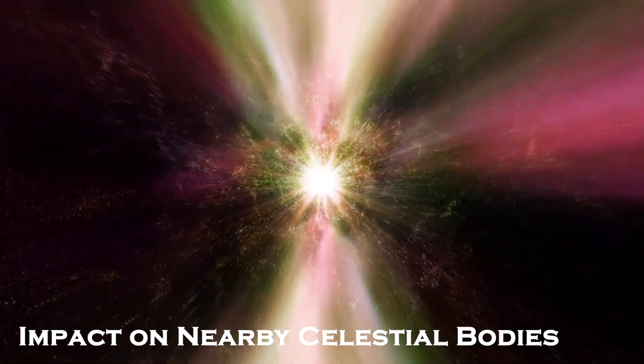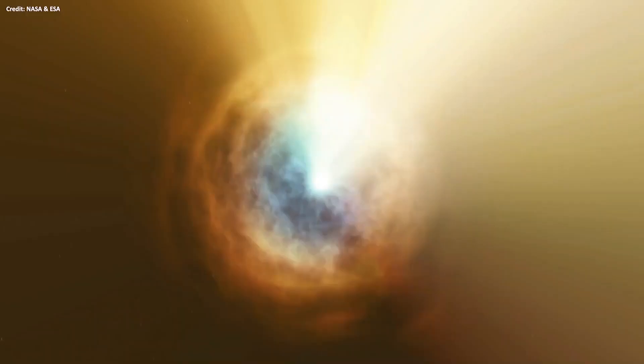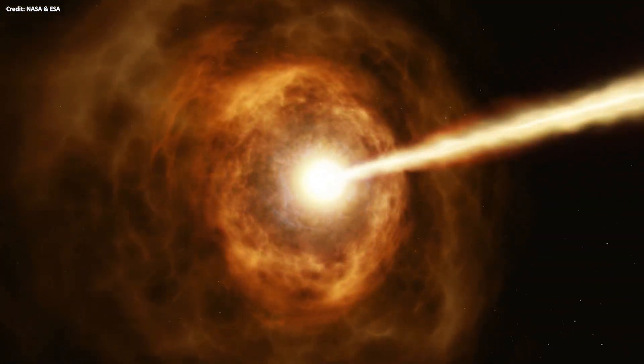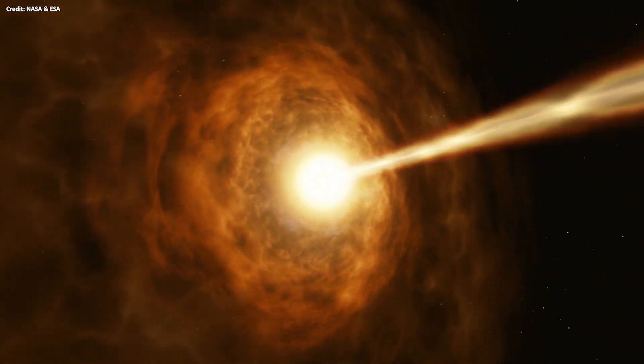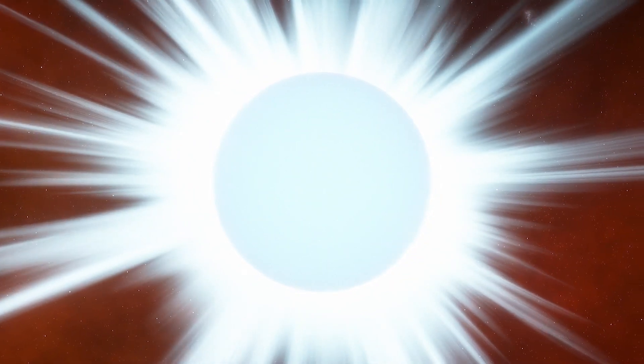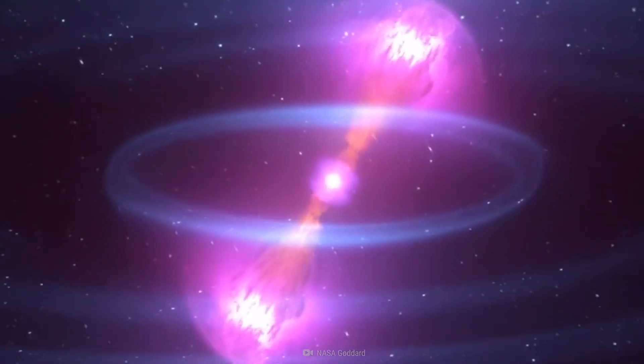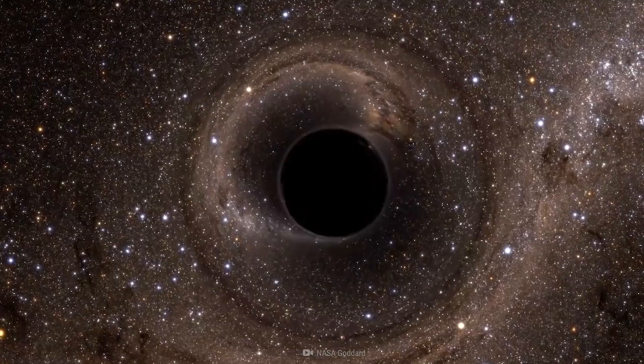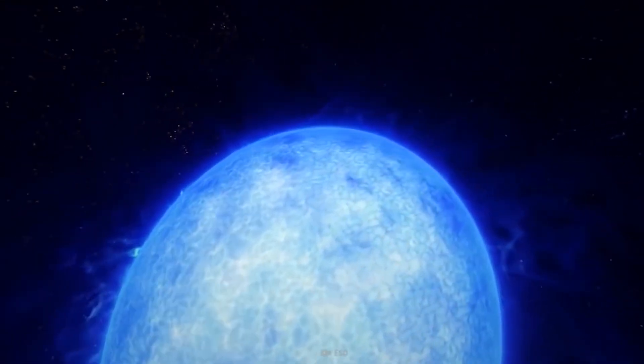Impact on Nearby Celestial Bodies. The tremendous energy release of GRB 080319B had potential consequences for nearby celestial bodies, such as stars, planets, and their atmospheres. The intense gamma-ray radiation could have ionized molecules and atoms in the vicinity, altering the chemical composition and physical properties of these objects. For example, the burst could have affected the atmospheres of nearby planets, causing significant heating, ionization, and potentially even the stripping away of their atmospheres. This would have profound implications for the habitability of these worlds and the conditions necessary for the existence of life as we know it.